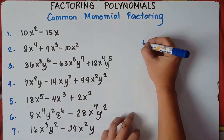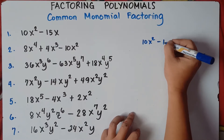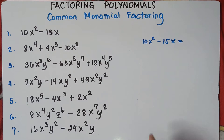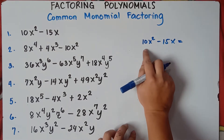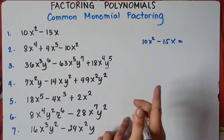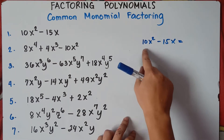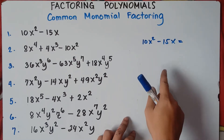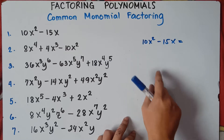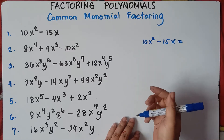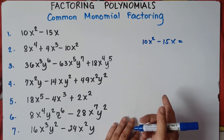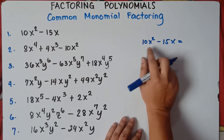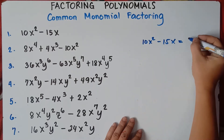So let's try number one: 10x squared minus 15x. For the numbers, you find the GCF — you think of a number that you can divide both 10 and 15. The greatest number would be 5, because 10 divided by 5 is 2, and 15 divided by 5 is 3. So the GCF of 10 and 15 is 5.